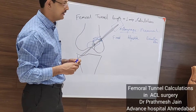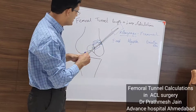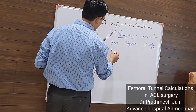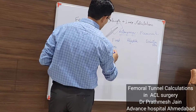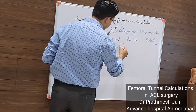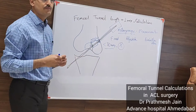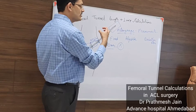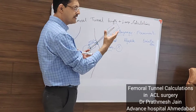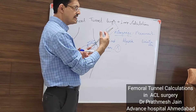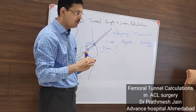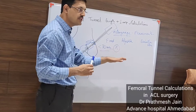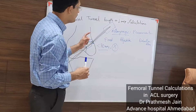If the femoral tunnel length is less than 30 mm, I recommend you do not accept it, because we need at least 50 mm of graft in the tunnel. The smallest available button size is 15 mm, but less than that is not easy to flip. If the tunnel is less than 30 millimeters, consider revising your primary bead pin placement.